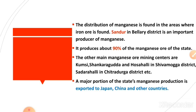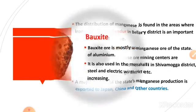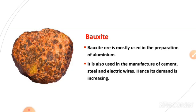A major portion of the state's manganese production is exported to foreign countries like Japan and China, due to a lack of manganese industries in the state. Now let us go to the third major mineral resource of Karnataka: bauxite.